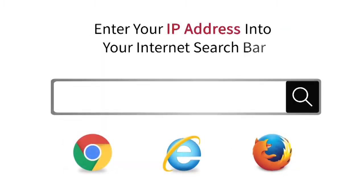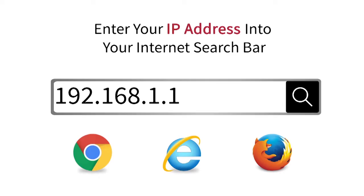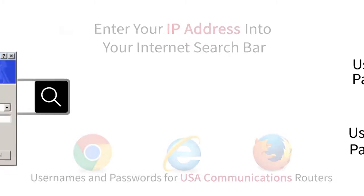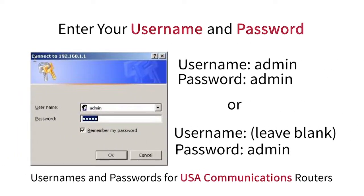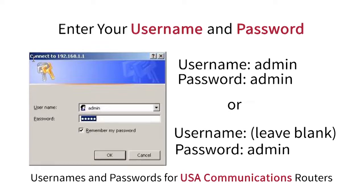Enter the IP address into the search bar in your internet browser. A screen should appear requiring your router's username and password. You must know the username and password to gain access to the router settings. If you are using a router provided by USA Communications, the username is either admin or you will leave that box blank. The password for both usernames is admin.